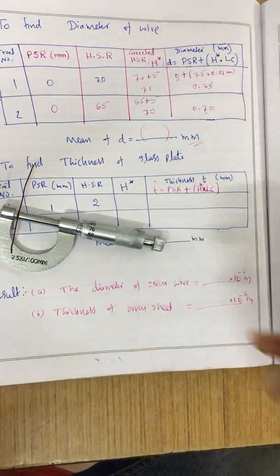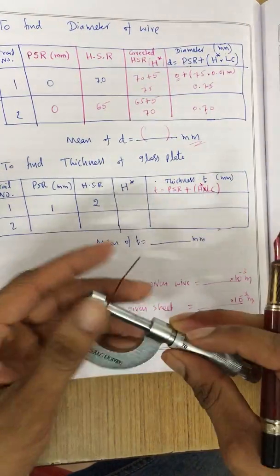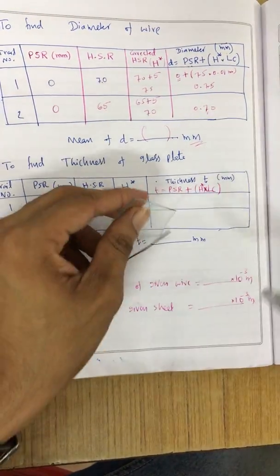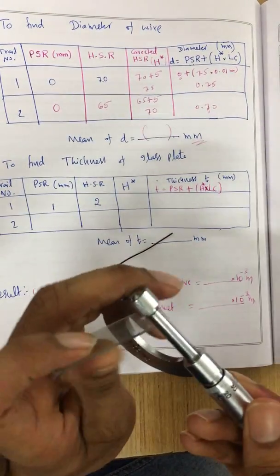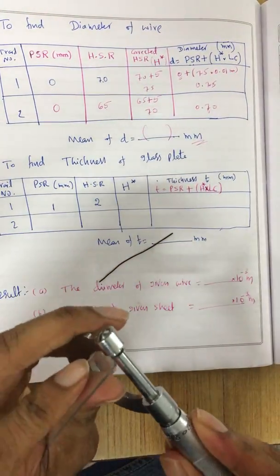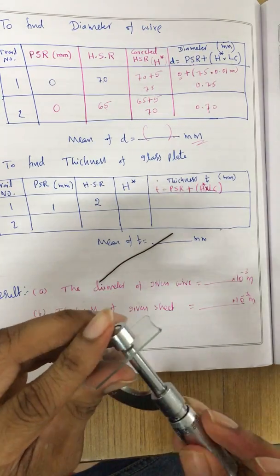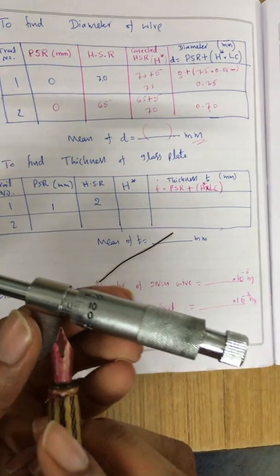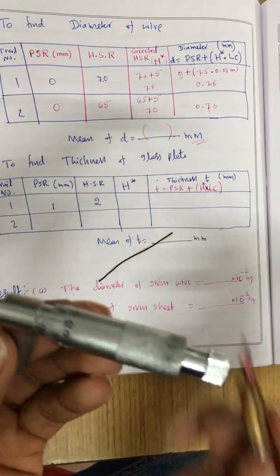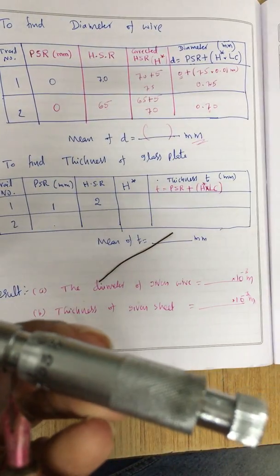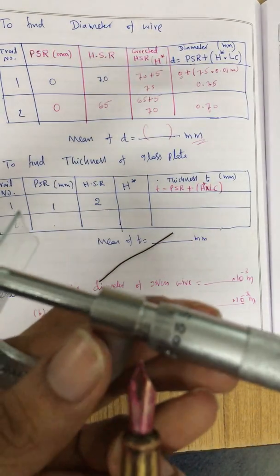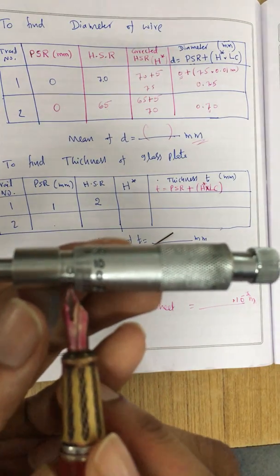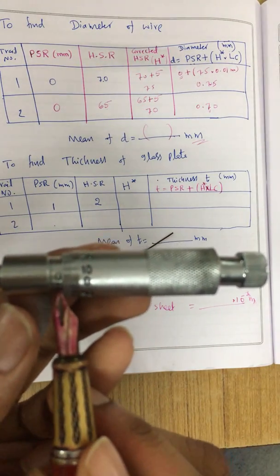Similarly, I can find out the thickness of the glass plate. I place the glass plate between the two jaws, tighten it, then refer to the P scale and head scale and write down the values. The P scale reading is 1 millimeter because I can see the second line as well, indicating a 1mm shift along the pitch scale.